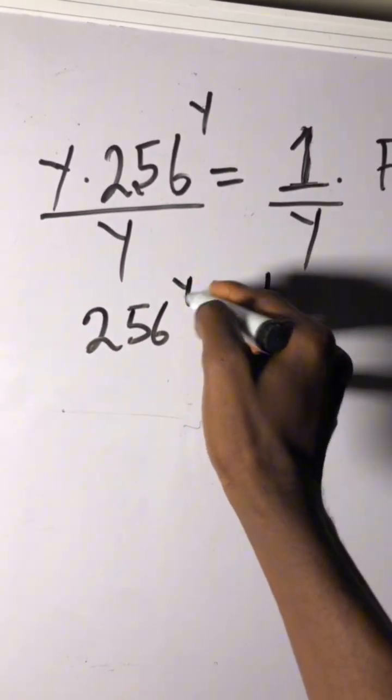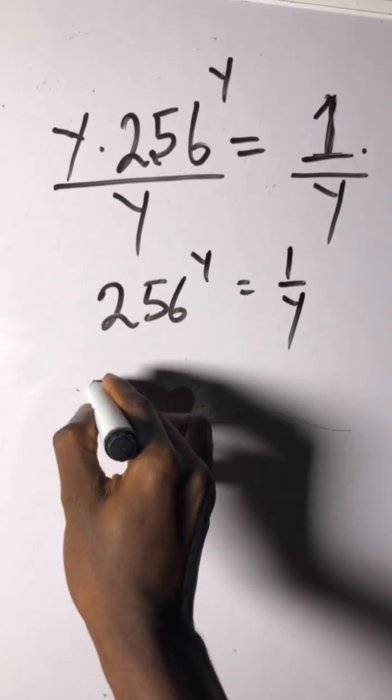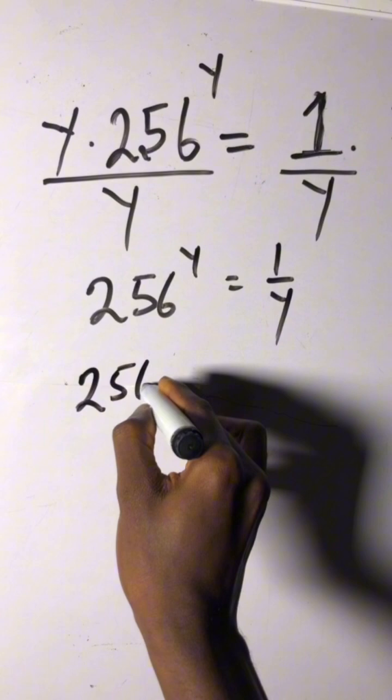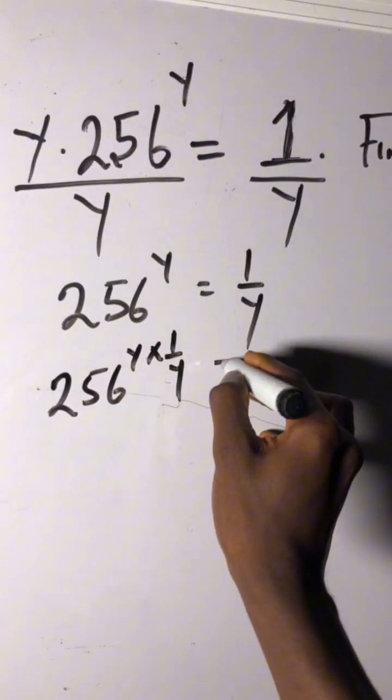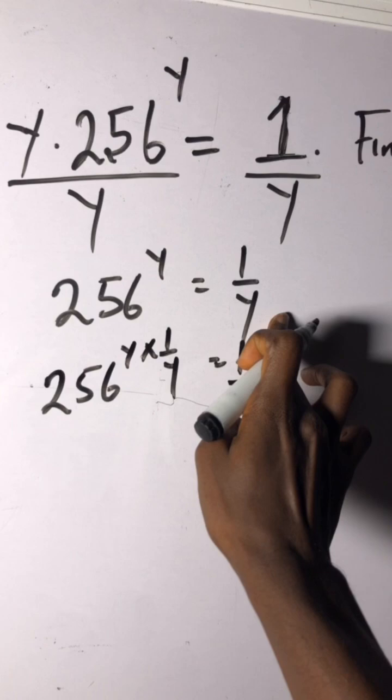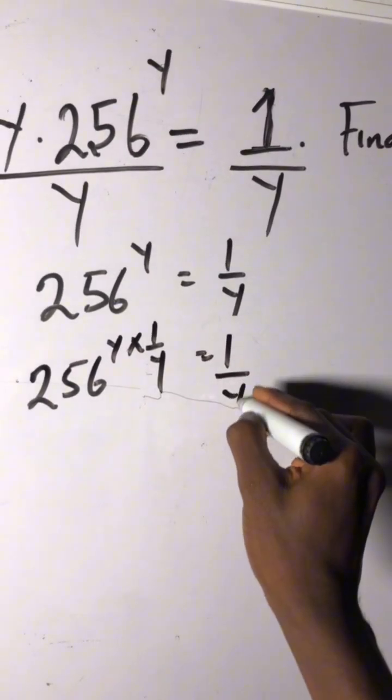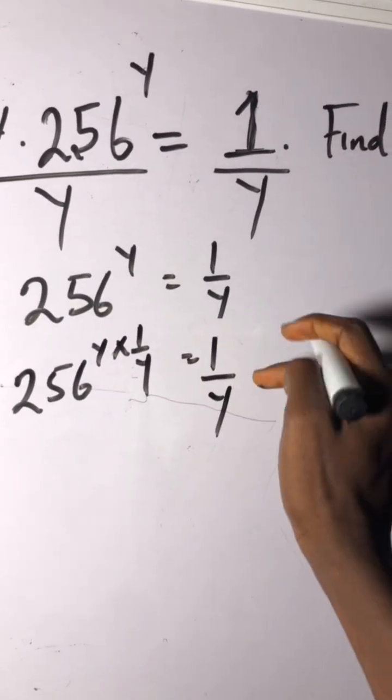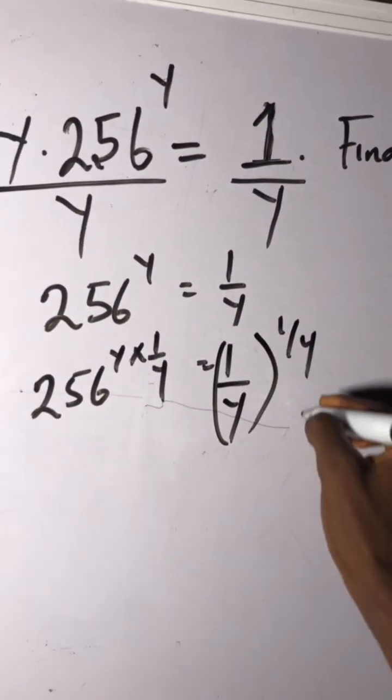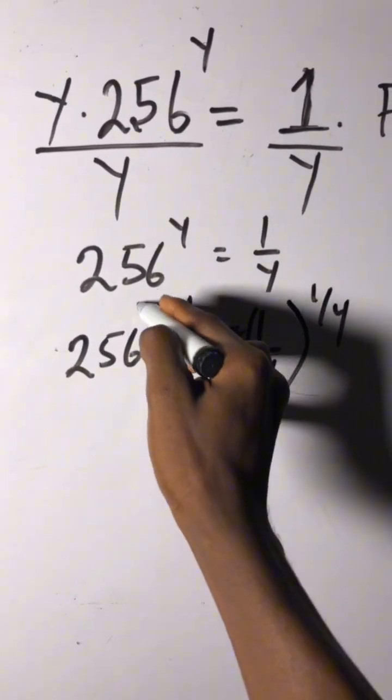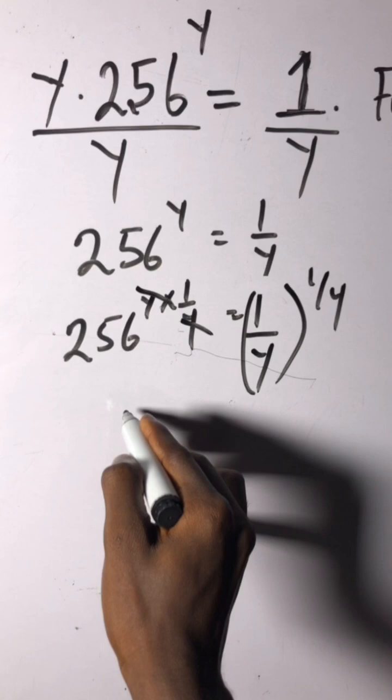Okay, so by introducing the inverse and that would be y times 1 over y equals 1 over y times 1 over y. Alright, so this cancels this, I'm left with 256 equals 1 over y to the power of 1 over y.